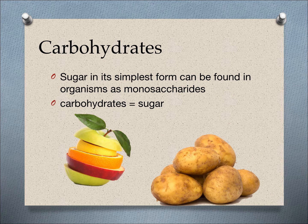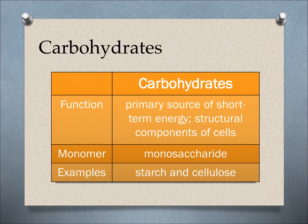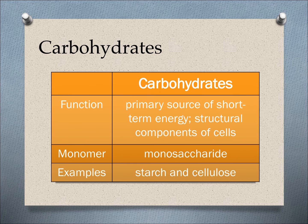Sugar in its simplest form can be found in organisms as monosaccharides. Carbohydrates turn into sugar as soon as you ingest them. Carbohydrates are the primary source of energy for all living organisms and are used as short-term energy. The function of carbohydrates is the primary source of short-term energy, and they can also provide structural components of cells. The monomer, the smallest part, is the monosaccharide. Some examples of carbohydrates are starch and cellulose.